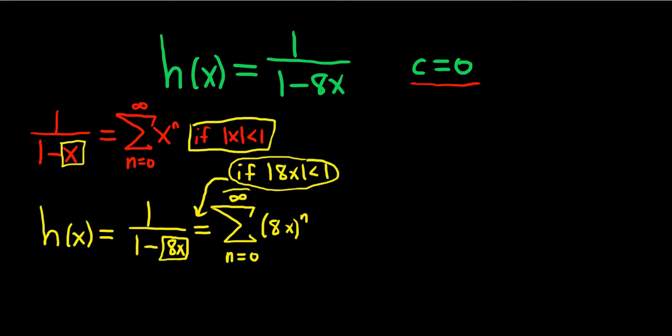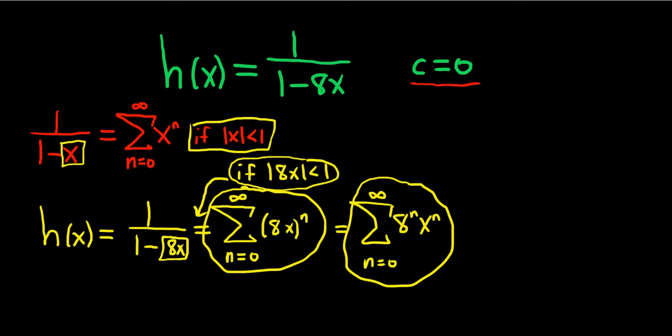So for now this is it. This is the answer. Perhaps a better way to write this would be infinite sum as n runs from zero to infinity of 8 to the n times x to the n. This is a little bit nicer but either of these is okay.